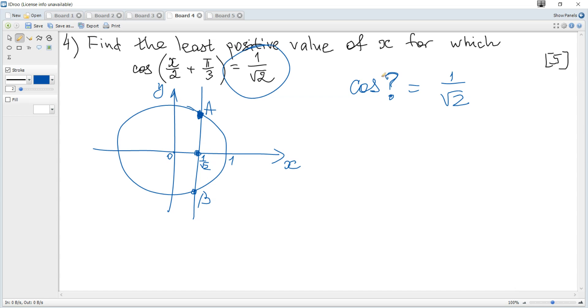Cosine of this angle is 1 over root 2. There exists an exact value: it's 45 degrees or π over 4.